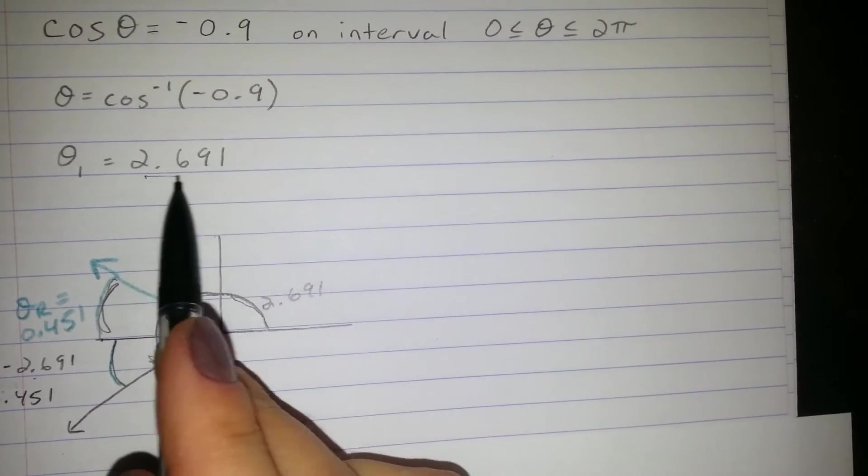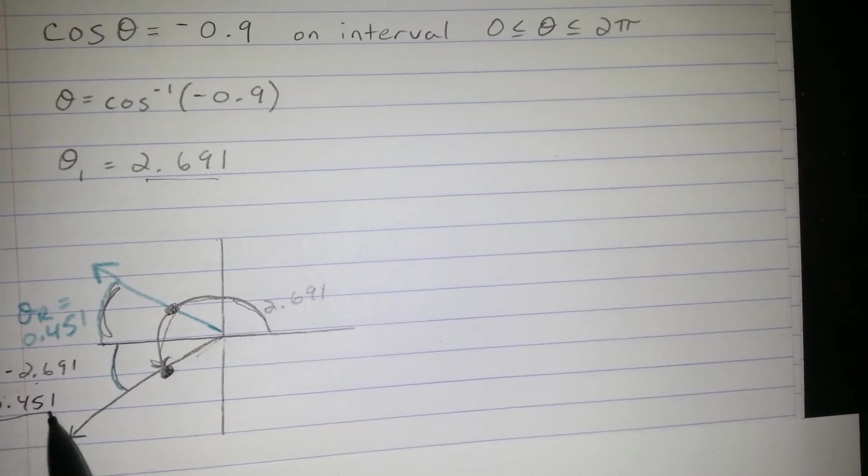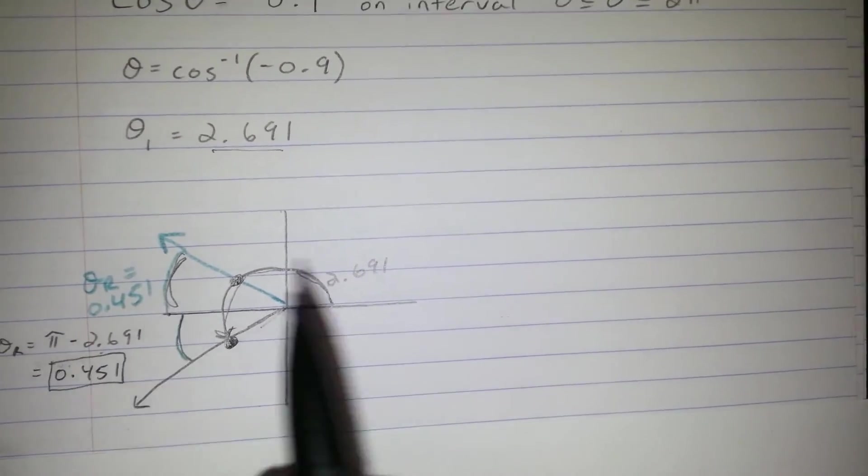Which is pi minus angle 1, gives you 0.451.